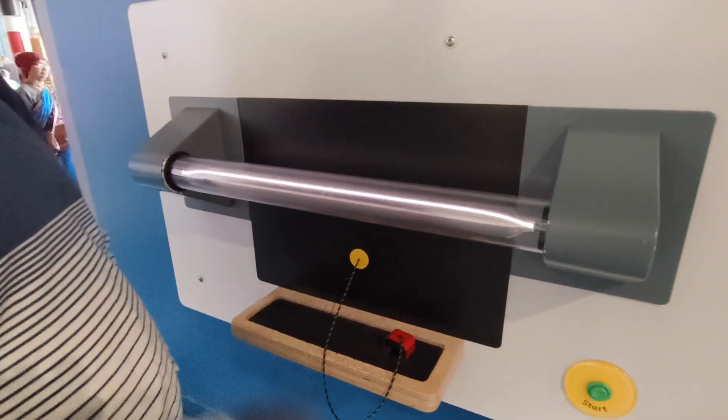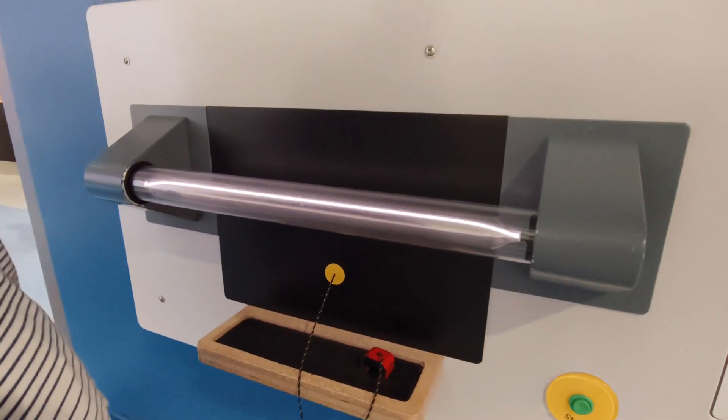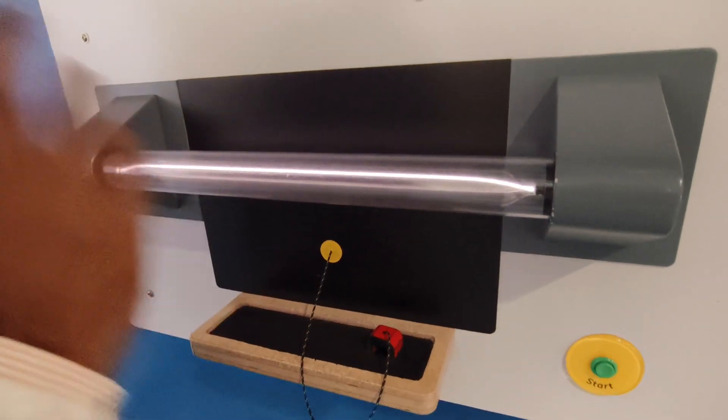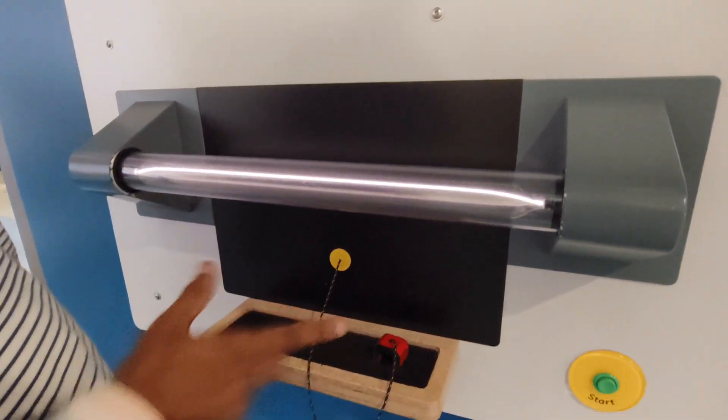During the discovery of electrons, electrons are deflected by applied magnetic field or applied electric field because electrons are negatively charged.